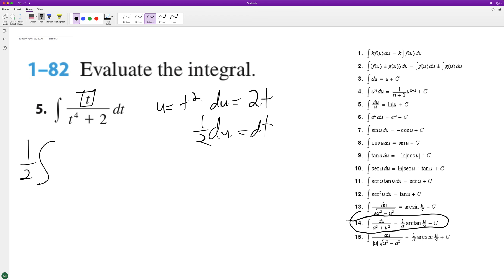So we have one half integral of du over u squared plus, and we'll turn this into u or square root of two squared.